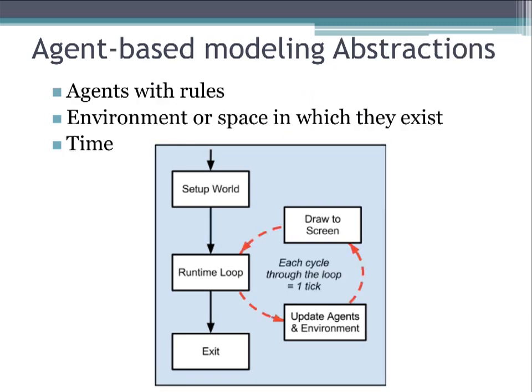There are three main abstractions in any agent-based model. The first one is that there are agents with rules. The second is that there's an environment or space within which the agents live. And the third abstraction is time. Time is dictated by ticks, and one tick equals one cycle through the runtime loop.